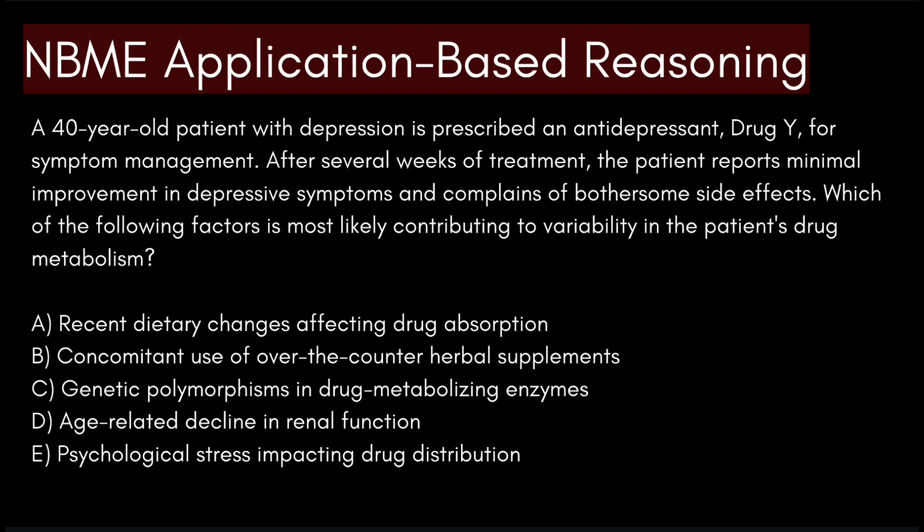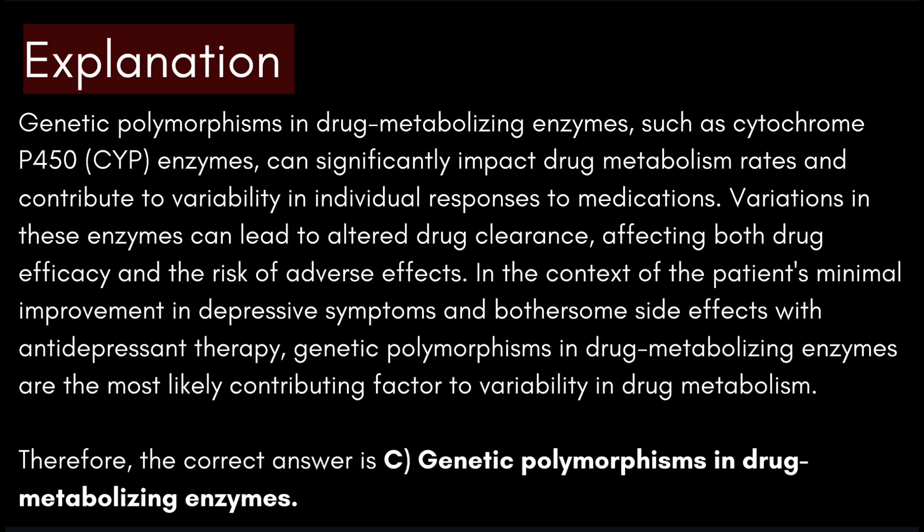Genetic polymorphisms in drug metabolizing enzymes — such as cytochrome P450, or CYP enzymes — can significantly impact drug metabolism rates and contribute to variability in individual responses to medications. Variations in these enzymes can lead to altered drug clearance, affecting both drug efficacy and the risk of adverse effects. In the context of the patient's minimal improvement in depressive symptoms and bothersome side effects with antidepressant therapy, genetic polymorphisms in drug metabolizing enzymes are the most likely contributing factor. Therefore, the correct answer is C — genetic polymorphisms in drug metabolizing enzymes.